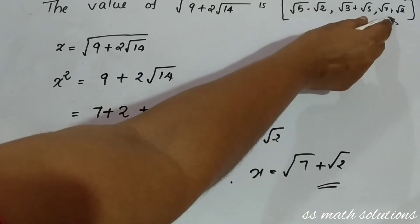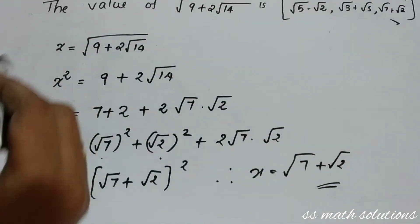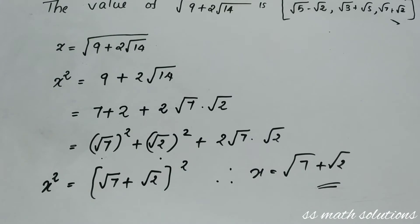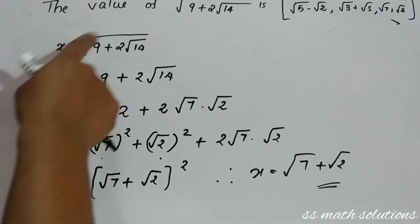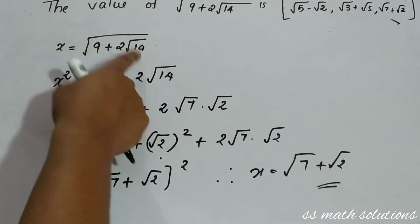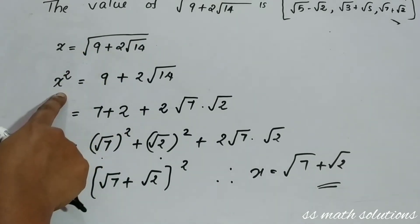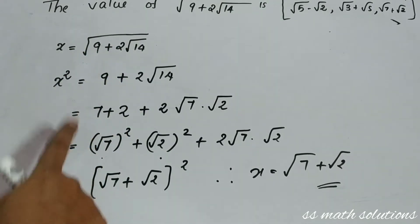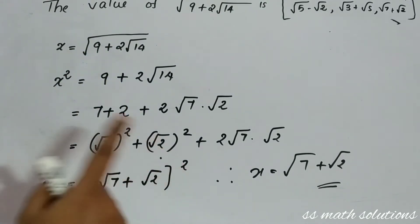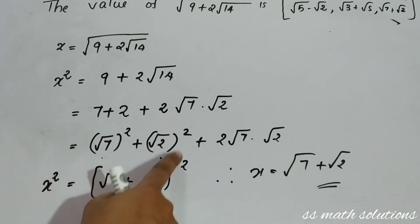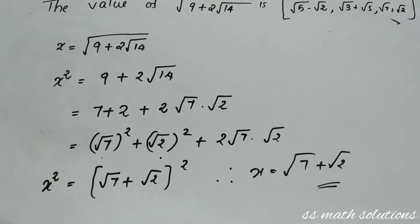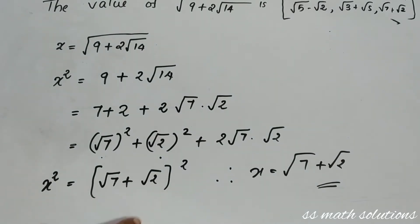So the answer is √7 + √2. To recap: we called the given expression x, squared both sides, changed 7 and 2 to √7 and √2, applied the (a+b)² identity, and got x = √7 + √2.